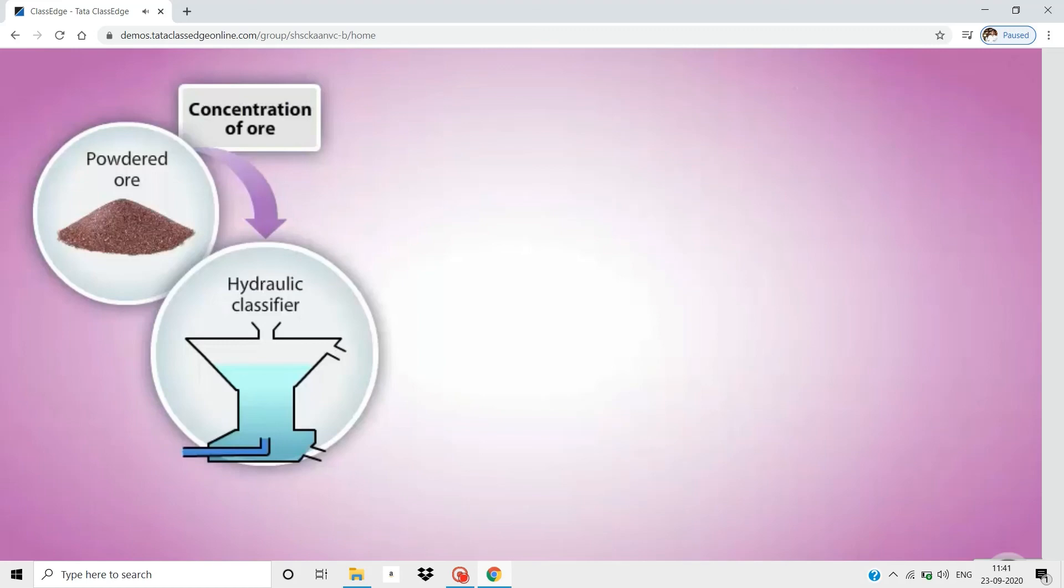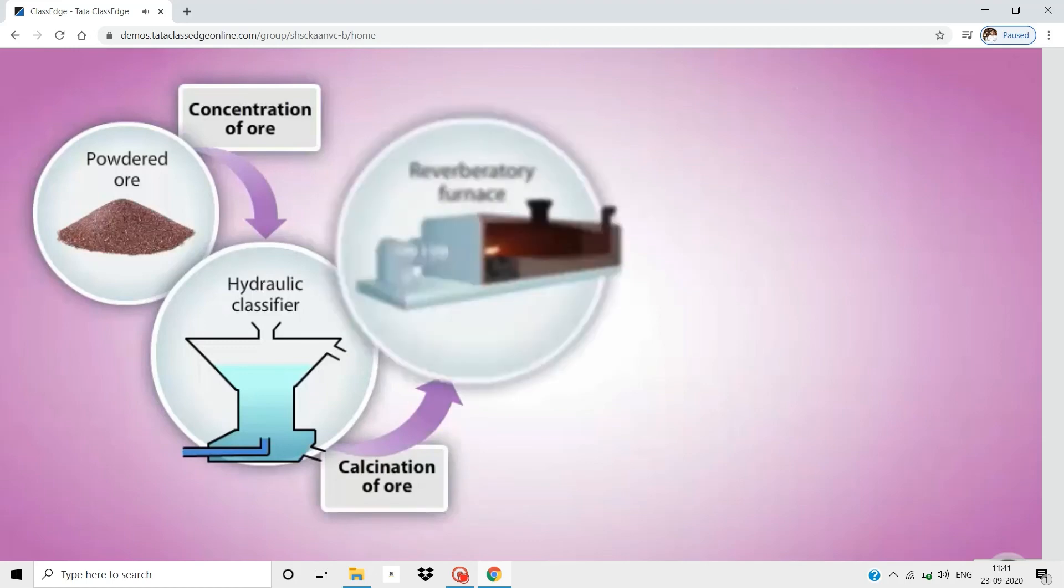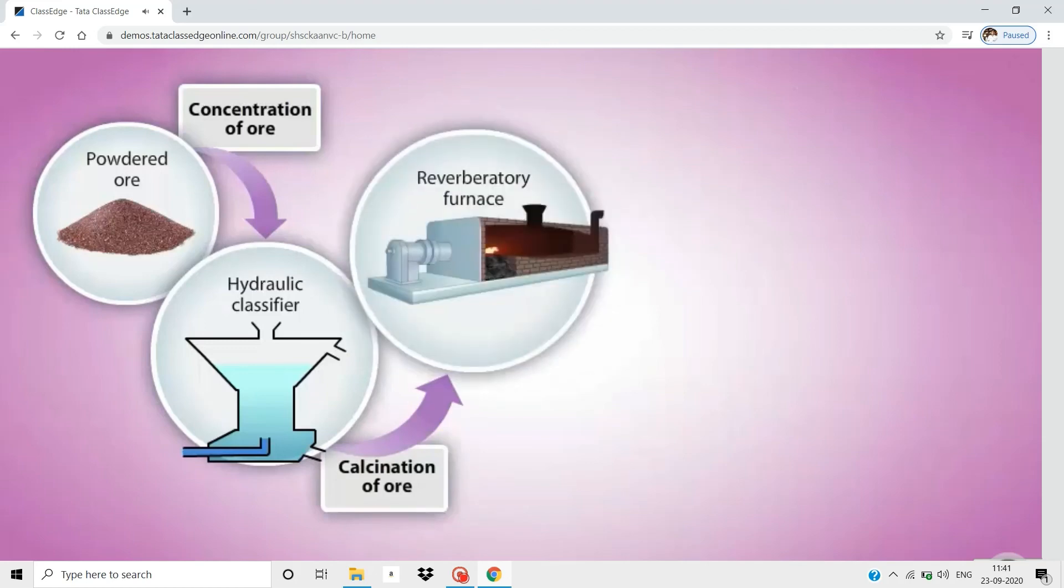Next, the concentrated ore is calcinated. This involves heating in a reverberatory furnace. The volatile impurities and moisture are removed in this process.